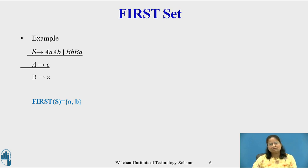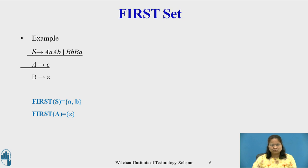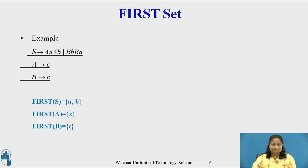To compute First(A), consider the production A derives epsilon. First(A) = epsilon by Rule 2. Similarly, to compute First(B), consider the production B derives epsilon. First(B) = epsilon.